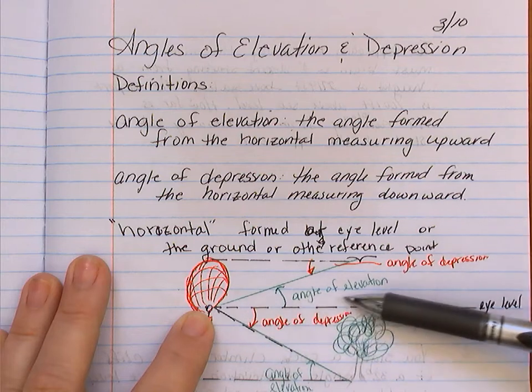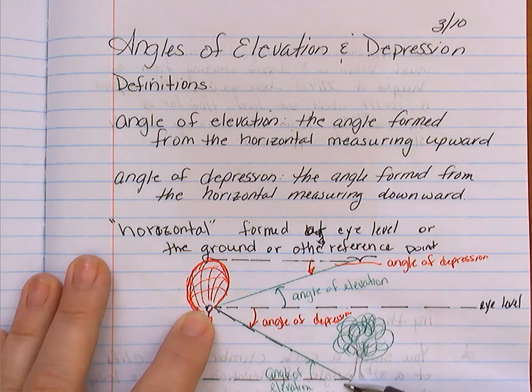Again, looking from the person's point of view, which is the line of sight, down to the base of the tree, that's an angle of depression.